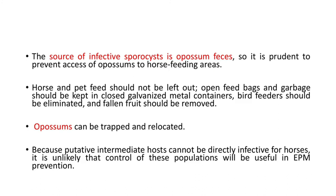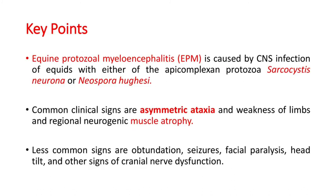Horse and pet feed should not be left out; open feed bags and garbage should be kept in closed galvanized metal containers. Bird feeders should be eliminated and fallen fruit should be removed. Opossums can be trapped and relocated. Because putative intermediate hosts cannot be directly infective for horses, control of their population is unlikely to be useful in prevention.